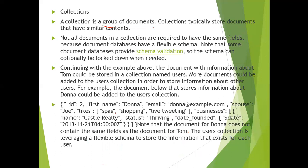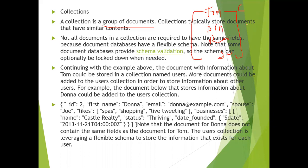For example, Tom's details, Pinky's details, Rada's details, Sham's details — all these individual documents, when put together, are called a collection. Collections typically store documents that have similar content. In Tom's document you write address, phone number, email ID; similarly for Pinky you write name, address, date of birth, email address, phone number.